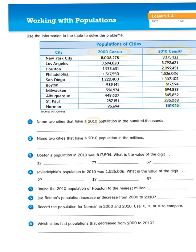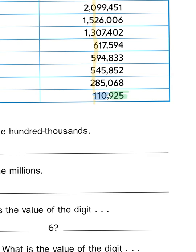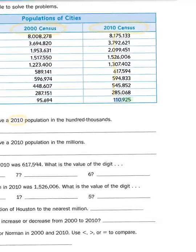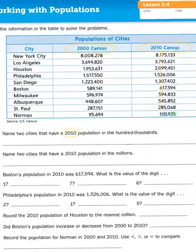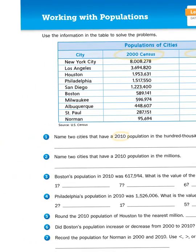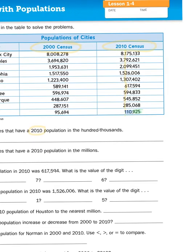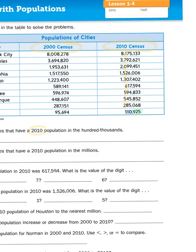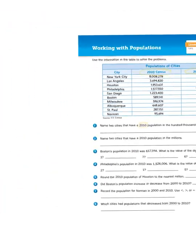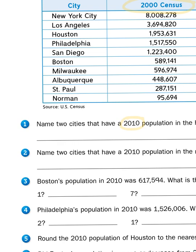The city of Norman, which is in Oklahoma, has a population that is six digits long, putting it in the hundreds of thousands — it's 110,925. The city right above it is St. Paul, in Minnesota. So those two answers would work for this question. There are several cities with a population still in the 100,000s in 2010, but I'm going to choose St. Paul and Norman because those are the ones I mentioned first.